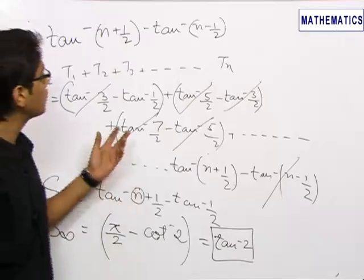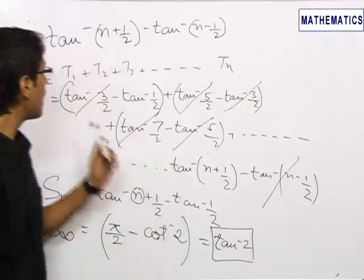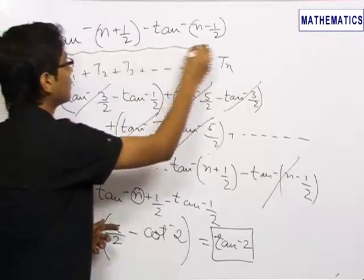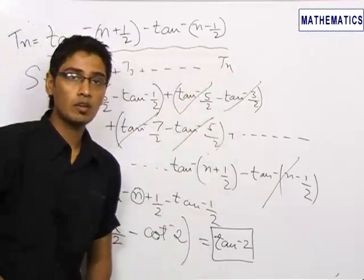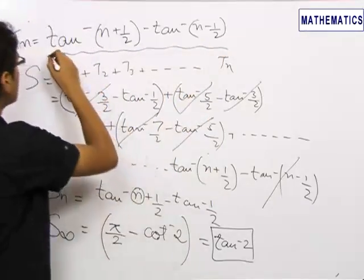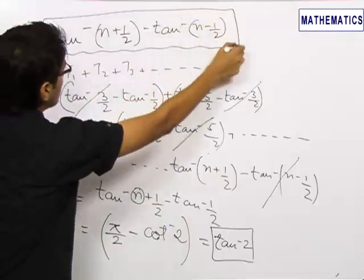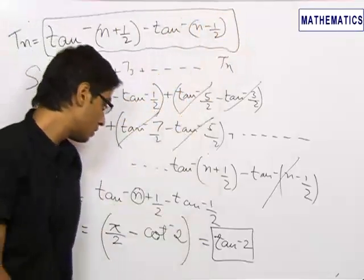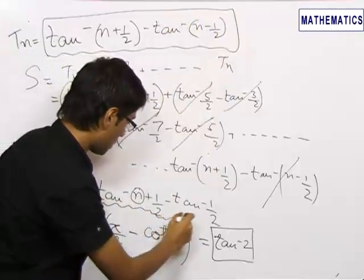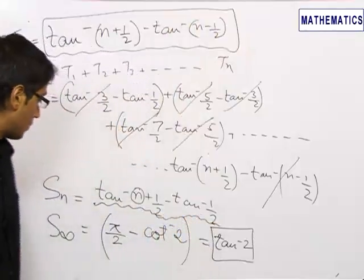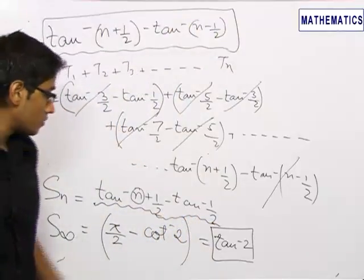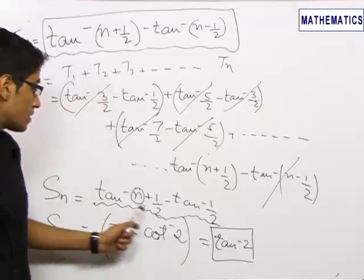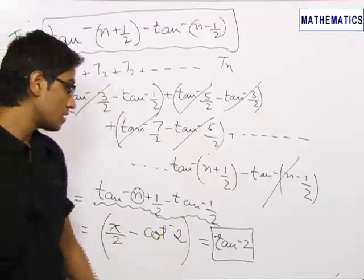The basic concept used in this question was to create the nth term of the series in the form of tan⁻¹((a − b)/(1 + ab)), so as to write it in the format of tan⁻¹(a) − tan⁻¹(b), so that terms cancel out and we get a much simpler sum. The sum up to infinite terms equals tan⁻¹(2), and the sum up to n terms is tan⁻¹(n + 1/2) − tan⁻¹(1/2).